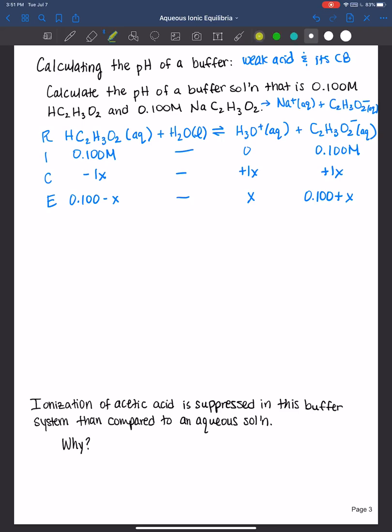Now our goal is to calculate the pH of this buffer. Remember pH is equal to the negative log of the hydronium concentration at equilibrium. So essentially our goal is to figure out x here. And the way we're going to do that is utilize our Ka expression.